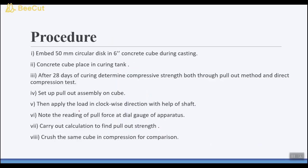For learning point of view, the cast-in insert pullout method can be demonstrated in laboratory. What we have to do is embed a 50mm circular disc in concrete cube during casting, then place that concrete cube after 24 hours in curing tank for curing purpose. Then after 28 days of curing, take out this cube from curing tank and determine the compressive strength both through pullout method and direct compression test.